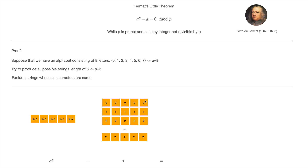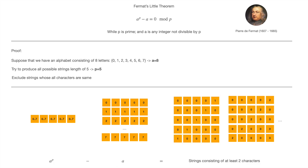Now I will exclude strings whose all characters are the same from the set of all possible strings. In the second column I demonstrate strings whose all characters are the same — all zeros, all ones, or all sevens. As you can see, there are eight different candidates for this set, which corresponds to the value a. So I find all possible strings a to the power of p, then exclude the a strings with all identical characters. This subtraction gives us strings consisting of at least two different characters.